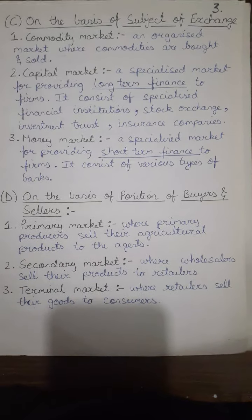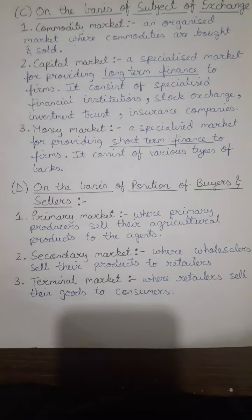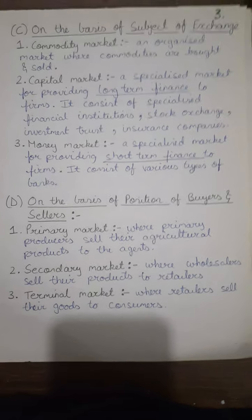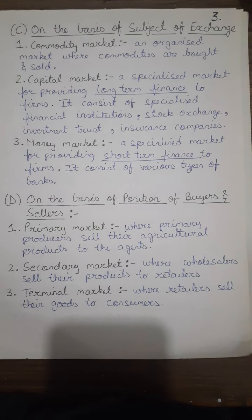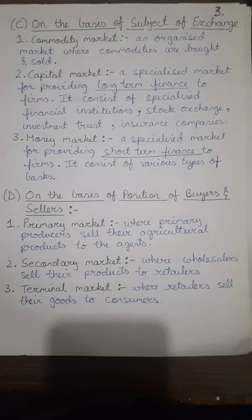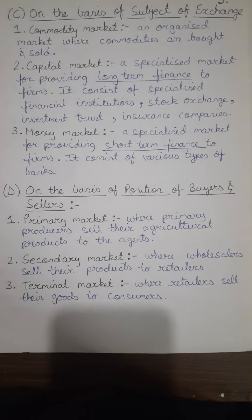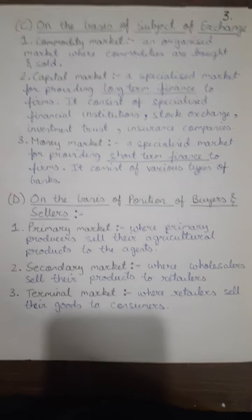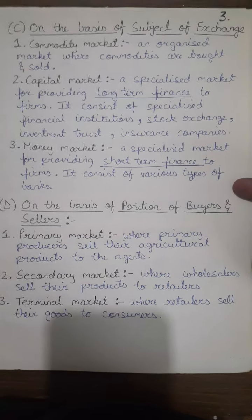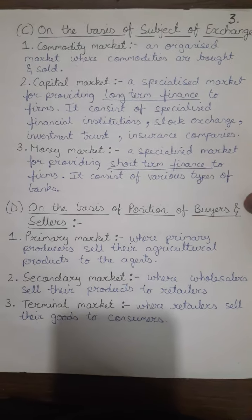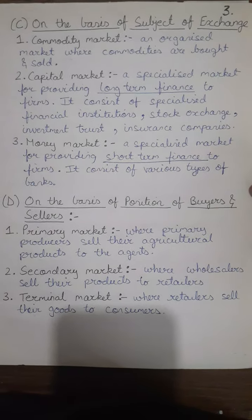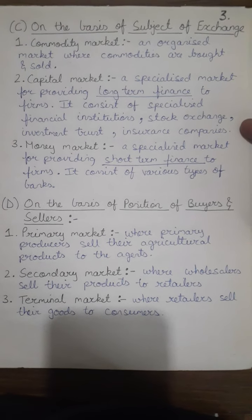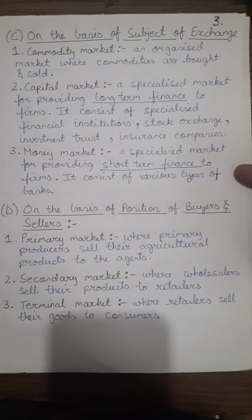Next, on the basis of subject of exchange: commodity market, capital market, and money market. Commodity market is an organized market where commodities like sugar, tea, cotton, etc. are bought and sold. Capital market is a specialized market which provides long-term finance to firms, whereas money market provides short-term finance to firms. Capital market constitutes financial institutions, stock exchanges, investment trusts, insurance companies, and so on, whereas money market consists of different types of banks.